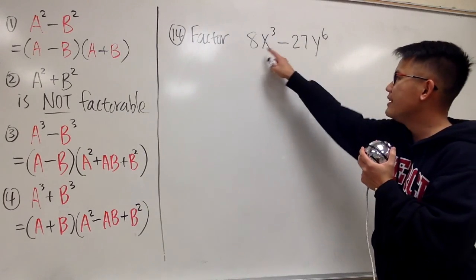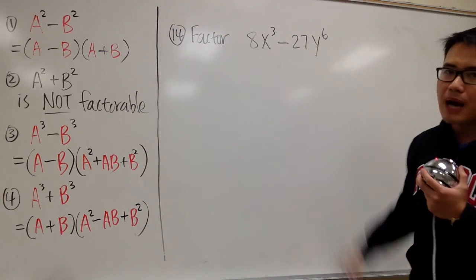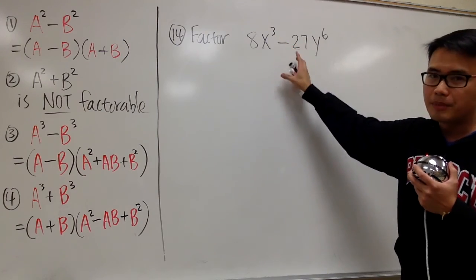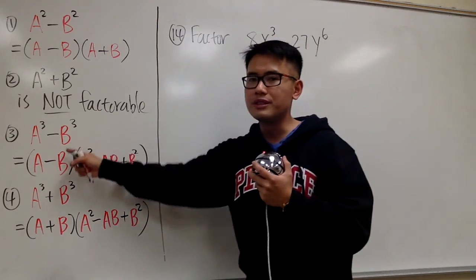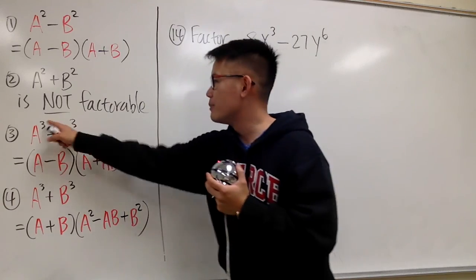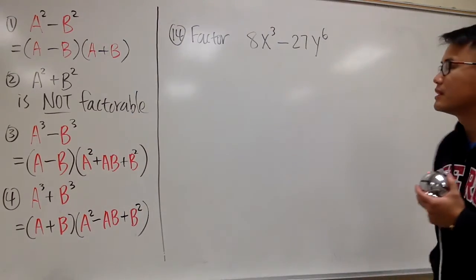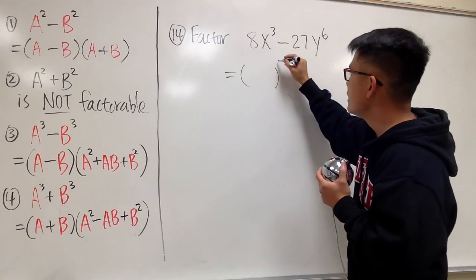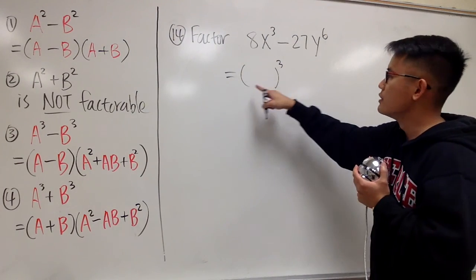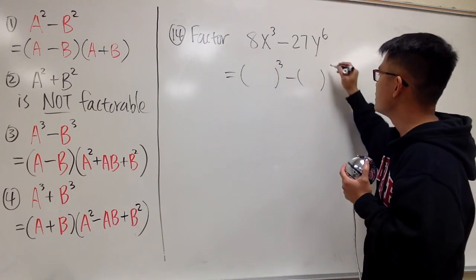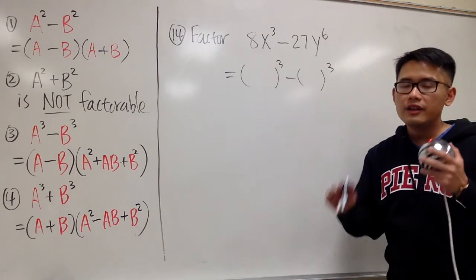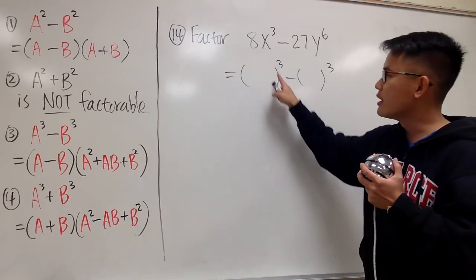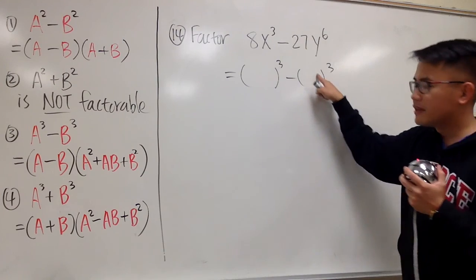Now we are going to factor 8x to the third power minus 27y to the sixth power. We see that this is subtraction and we have third powers, which are the big hints that we should use the difference of two cubes formula. To get started, I'm going to open two parentheses, both raised to the third power: parentheses to the third power, minus parentheses to the third power. We have to identify what should go inside each parenthesis — this is the A and this is the B.